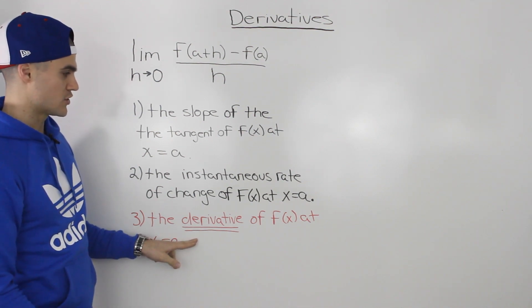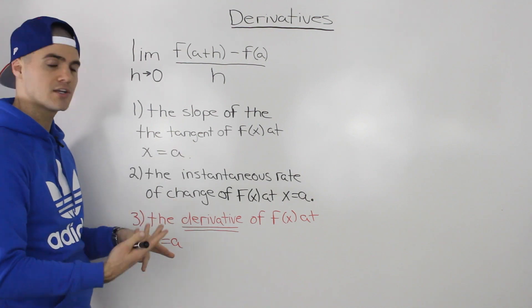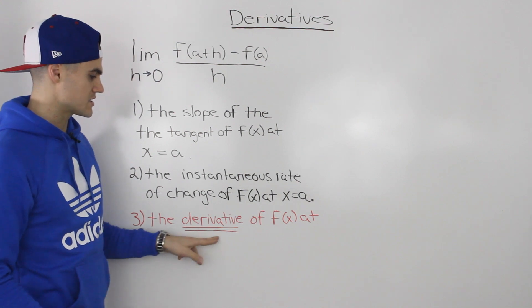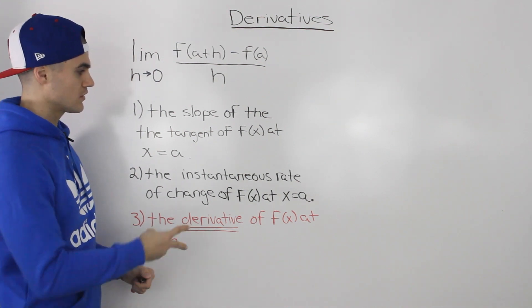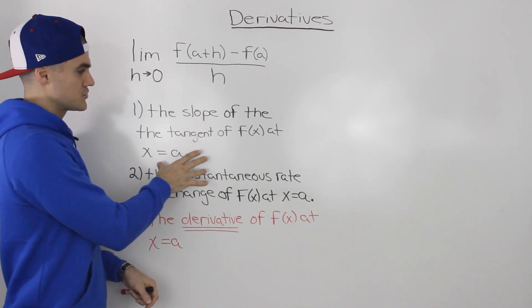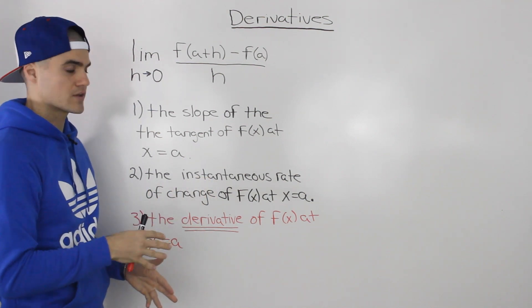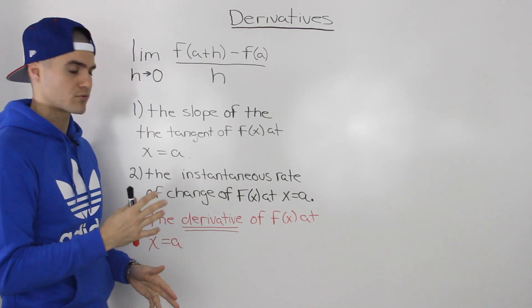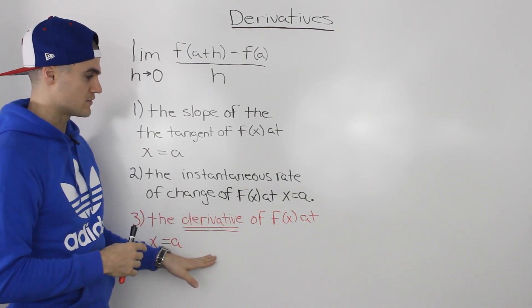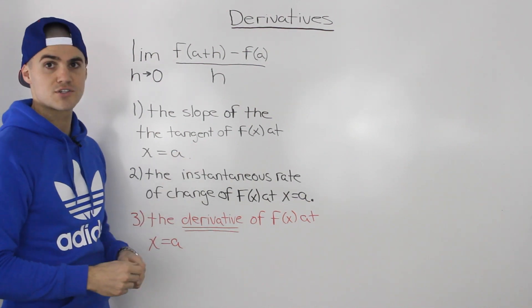So the derivative of a function, the instantaneous rate of change of a function, and the slope of the tangent of a function all mean the same thing. Because the concept of a derivative is the same as those two concepts covered in the previous chapter, if you're not fully comfortable with the slope of a tangent and the instantaneous rate of change, I would pause this video and go review those concepts before continuing, because we're going to be using a lot of what we learned in those previous two sections.